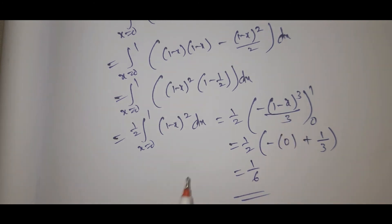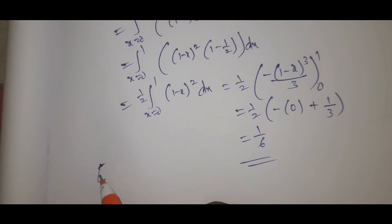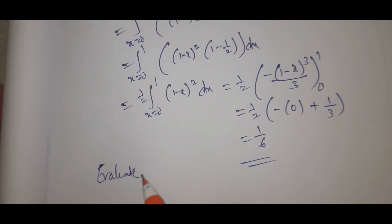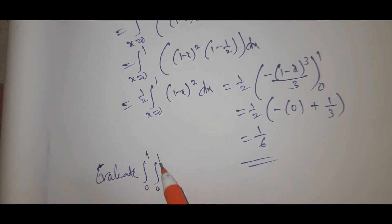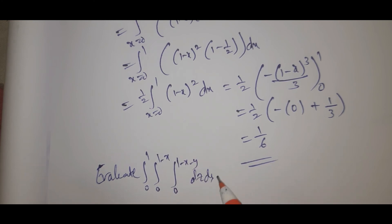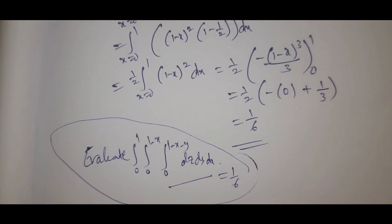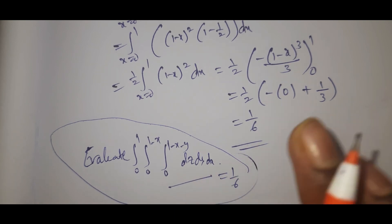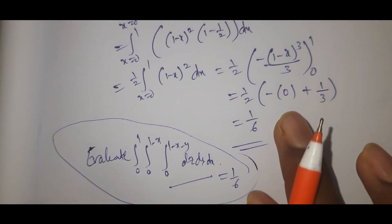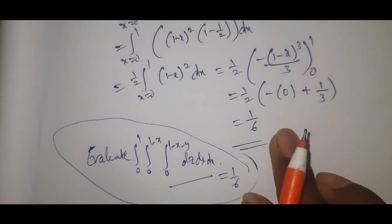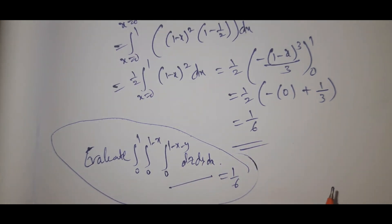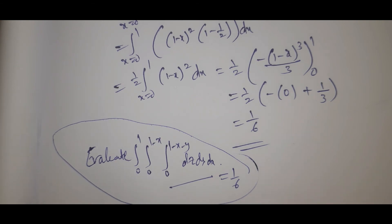So the value of the triple integral from 0 to 1, 0 to 1 minus x, 0 to 1 minus x minus y, dz dy dx equals 1 by 6. Thank you.